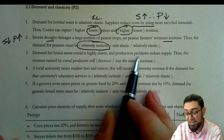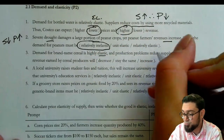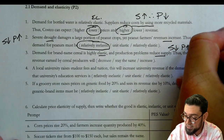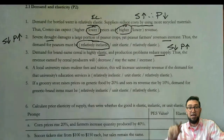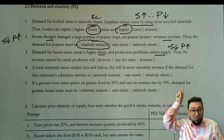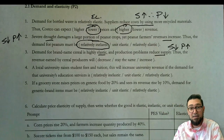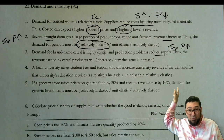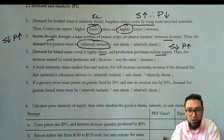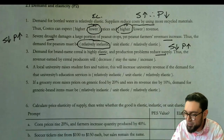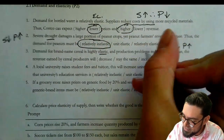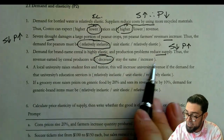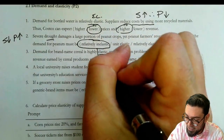Number three: demand for brand name cereal is highly elastic, and production problems reduce the supply. So supply decreases and the price is going to go up. Now, it's telling us it's elastic and price goes up — that's going to mean that we're going to see revenues go down, right, they move opposite each other. So if we know price is rising, then I know that the revenue earned is actually going to fall, and again, that's because I know that it's elastic.